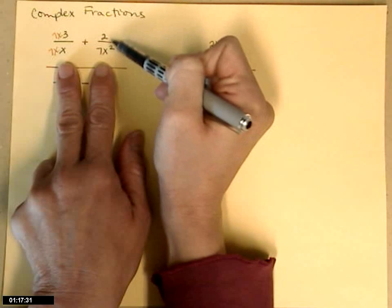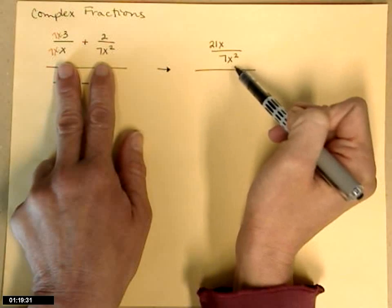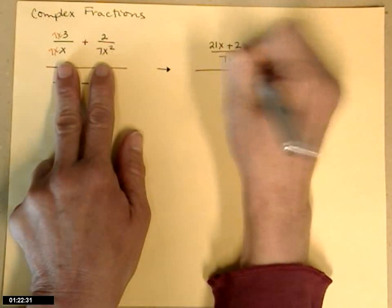When I look at the second fraction on top, it has the 7x squared I'm shooting for, so I just bring across that plus 2.